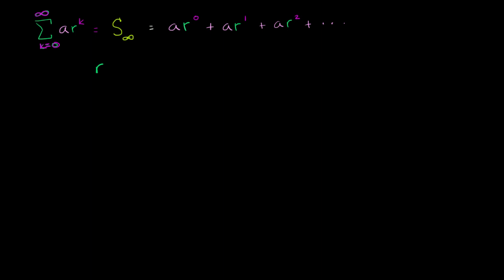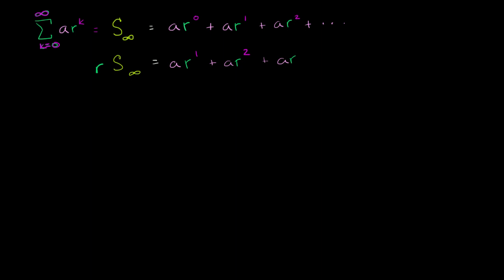When you start thinking about infinity, sometimes you have to think a little bit deeper. So r times this infinite sum is going to equal: a times r to the 0th power times r gives a times r to the 1st power; that times r gives a times r to the 2nd power; that times r gives plus a times r to the 3rd power — and we would just keep on going, plus dot dot dot.